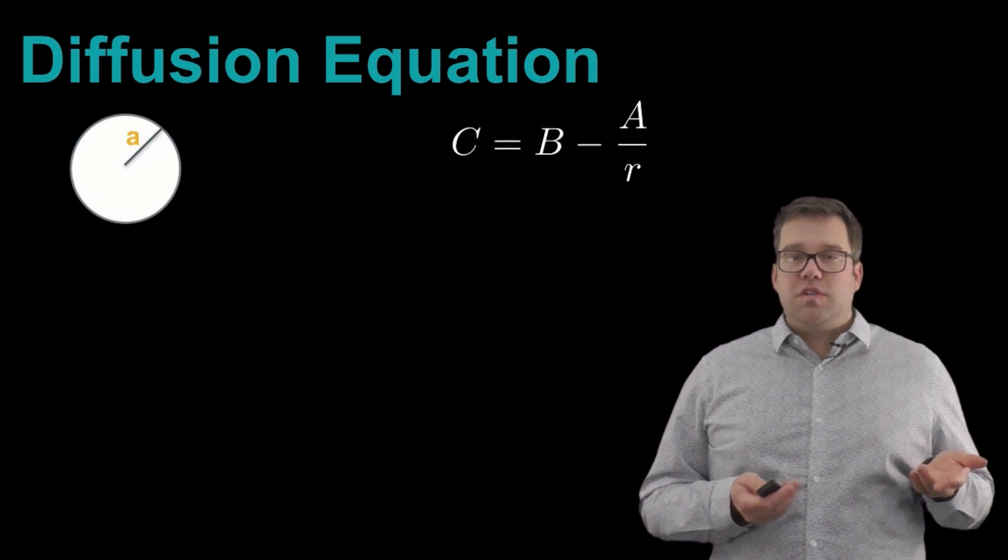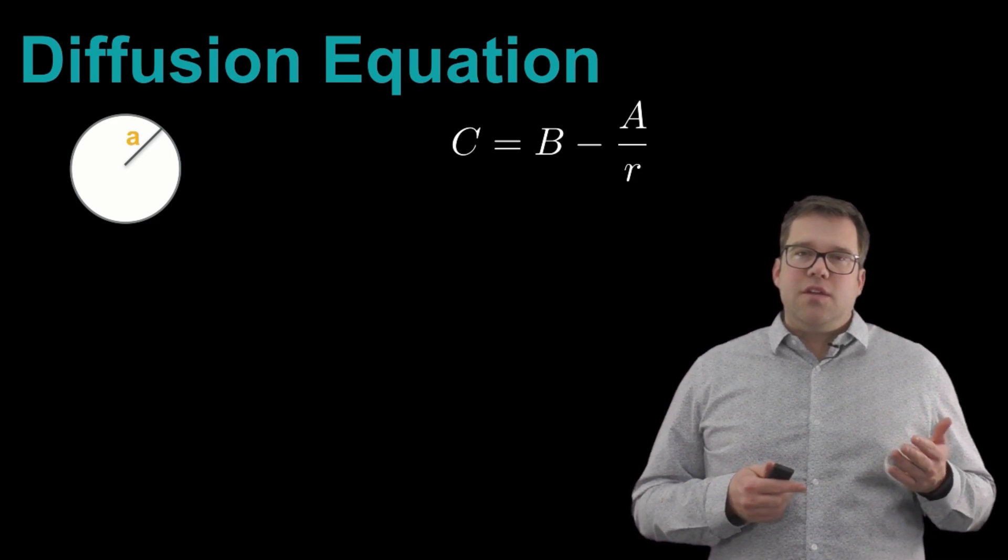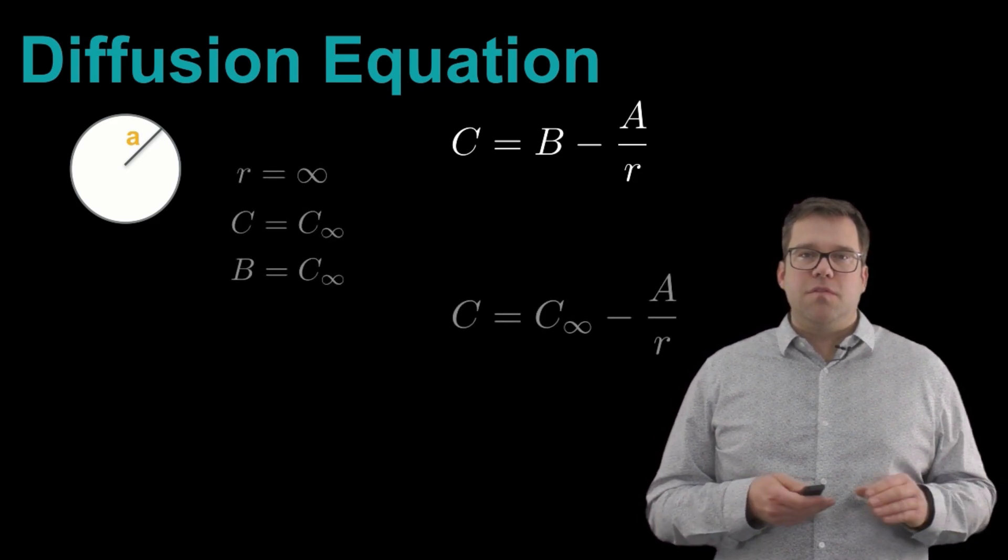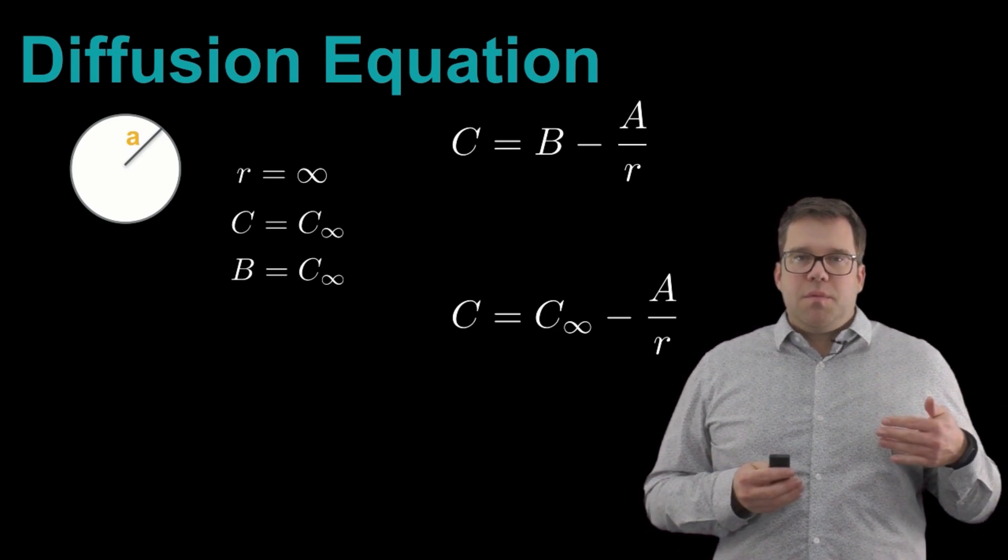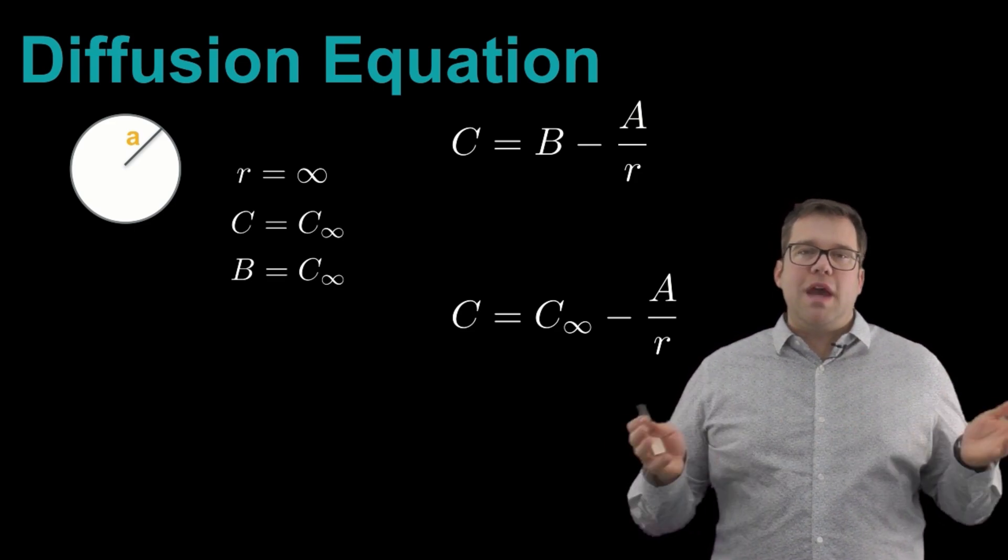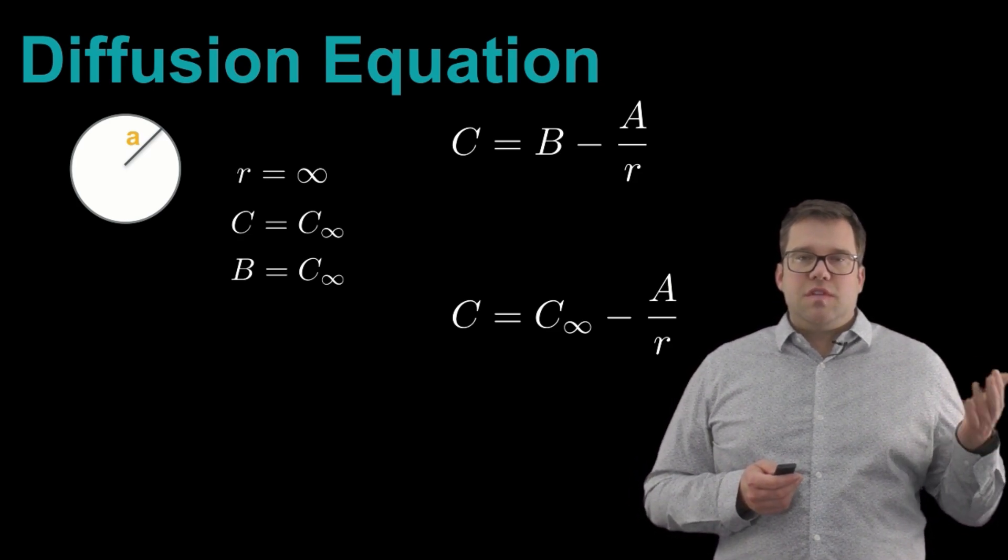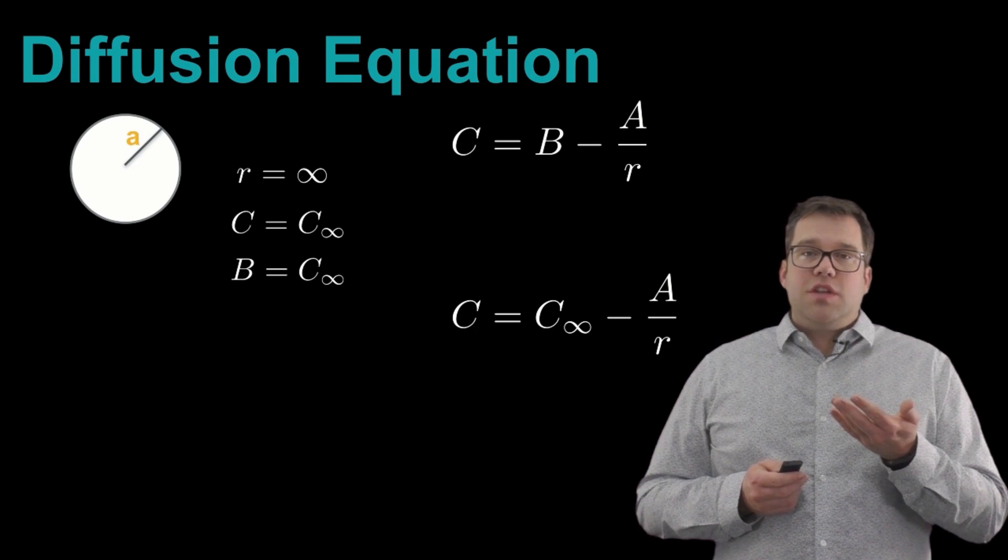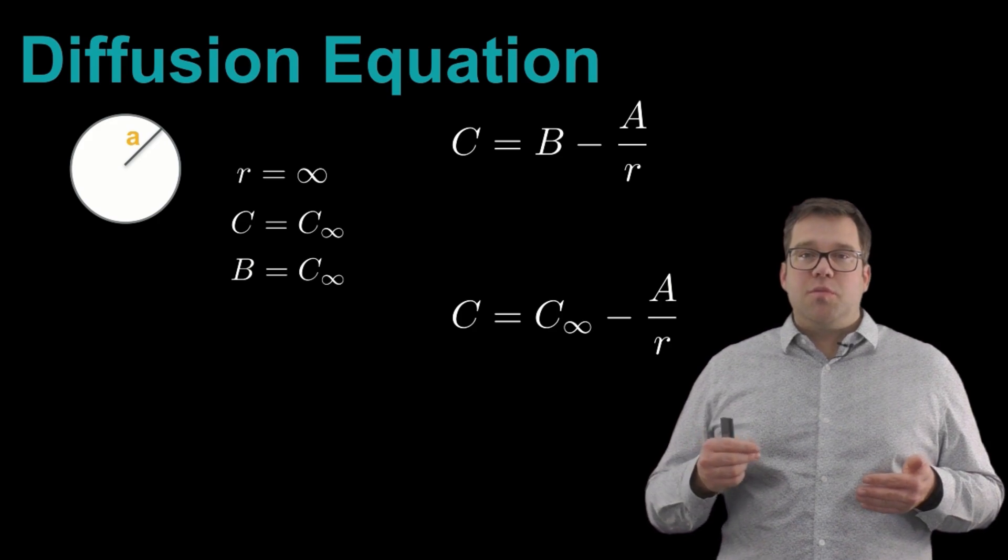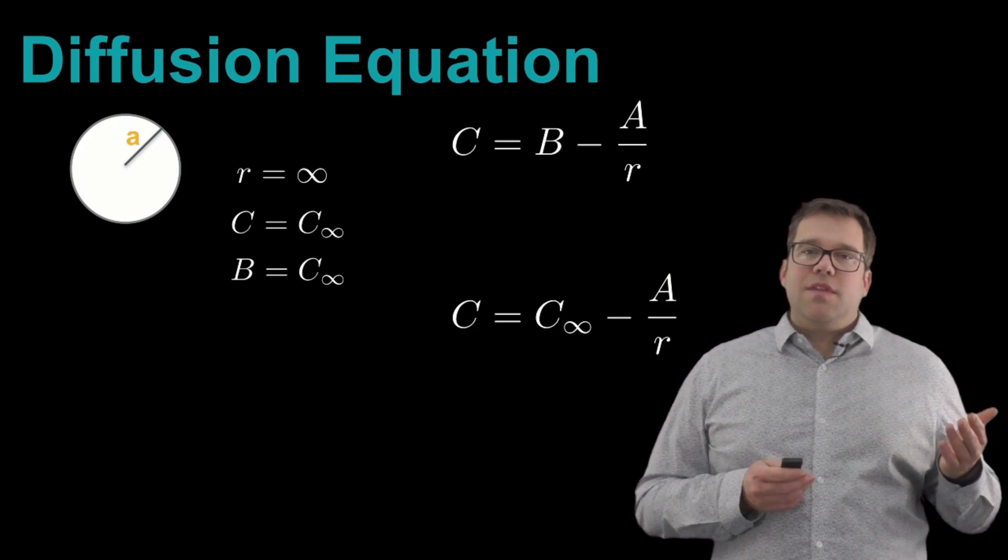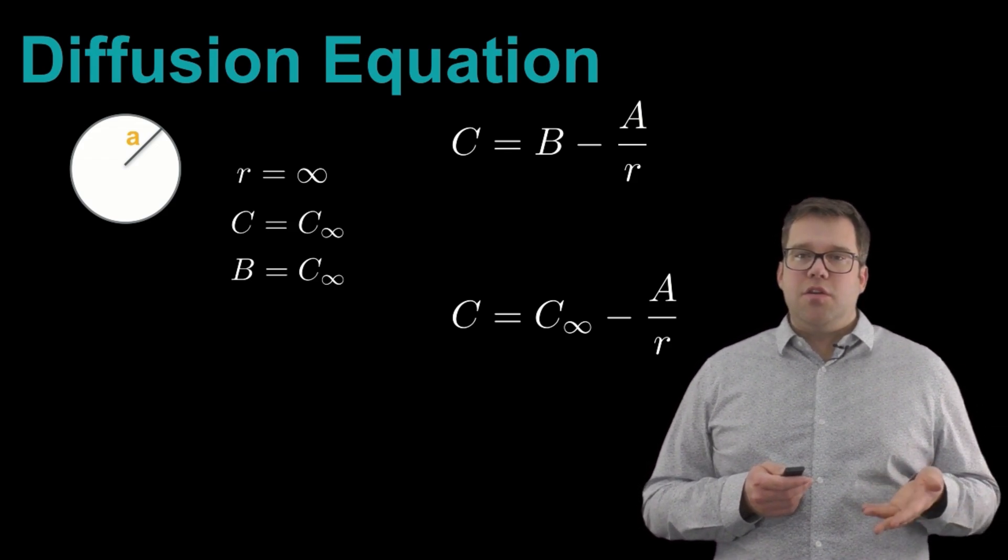We can then take this very general solution and start to set conditions for the context that we're looking at in order to find the values of B and A. So the first thing we can do is say that very far from the cell, from the spherical cell, let's say at r equals infinity, C goes to some background concentration that's just the concentration in the fluid. So this is now C equals some C infinity. And using that top equation, when we set r equal to infinity, that minus A over r term goes to zero, and we simply have that B equals C infinity. And that allows us to write then C equals C infinity minus A over r.